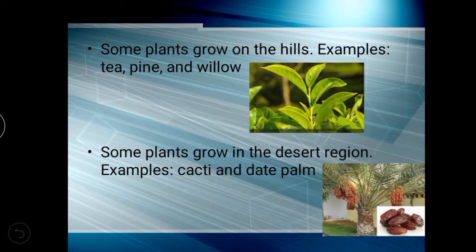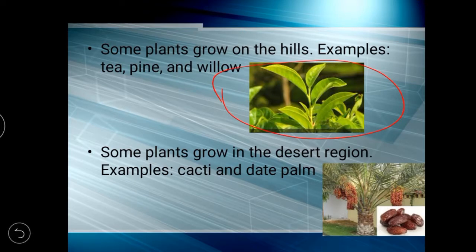Examples of hill plants include tea, coffee, vine, pine, and willow. This is the tea plant — we have seen it somewhere in hilly areas like hill stations. Coffee plants are also grown there. These small plants live in the hill region.